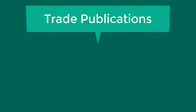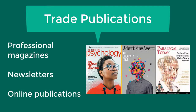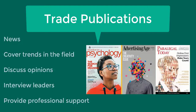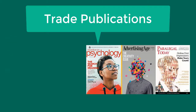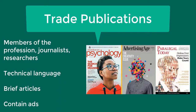Trade publications are another type of source you will find in library databases. These can be professional magazines, newsletters, or online publications written by professionals working in a particular field. Their purpose is to provide news, cover trends in the field, discuss opinions, interview leaders, review products, and provide professional support. Articles may be written by members of the profession, journalists, and researchers. Technical language is used, articles are usually brief, and the publications contain ads. Trade and professional literature resembles scholarly literature, but the content is different because they do not contain research articles.